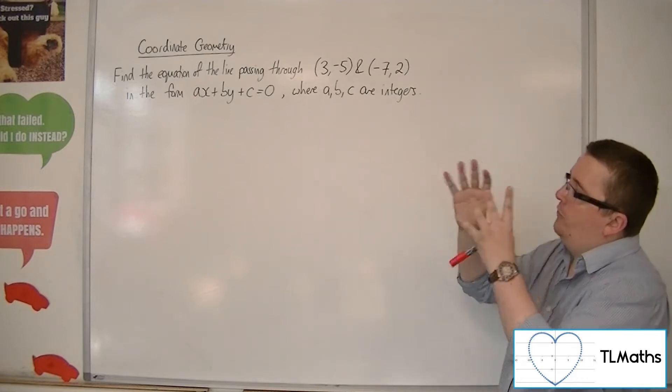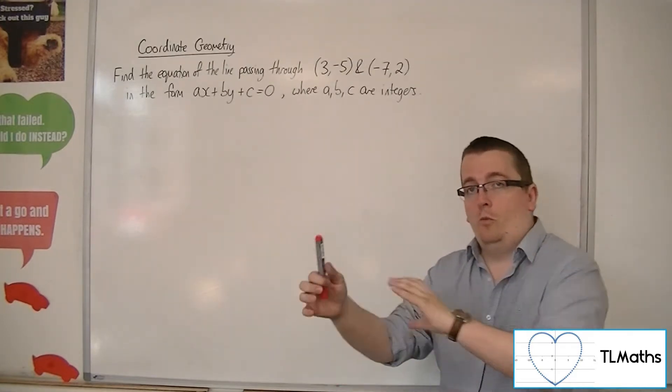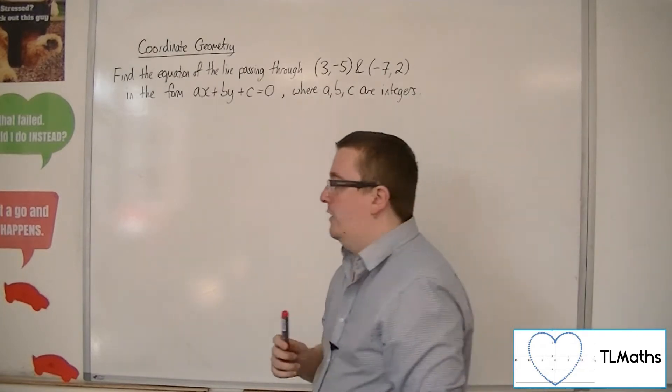So we're going to work through this and find the equation of the line in the form y minus y1 equals m times x minus x1.